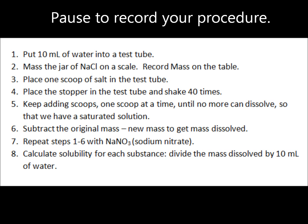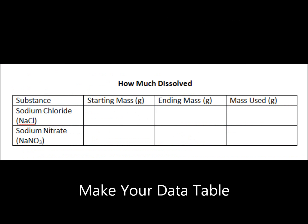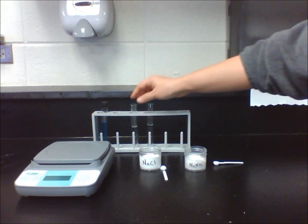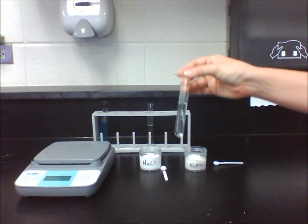Let's first put 10 mL of water into a test tube. Mass the jar of sodium chloride on a scale and record the mass on the table. Place one scoop of salt in the test tube. Place the stopper in the test tube and shake 40 times.